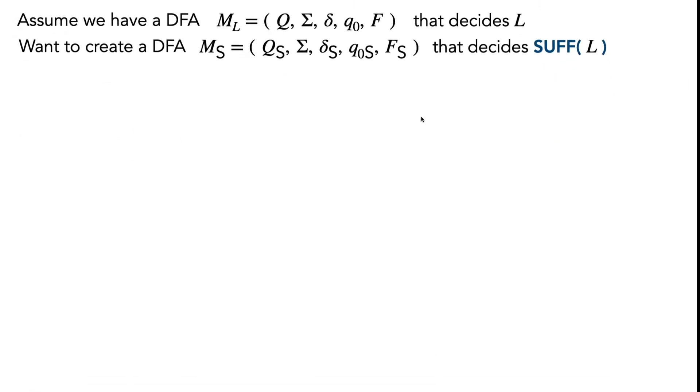The task at hand is coming up with this DFA M_S, and we need to specify what the elements of this 5-tuple are. Conveniently, the alphabet is going to be the same alphabet, so we don't have to worry about that. But we've got to figure out what the four things in this 5-tuple should be.